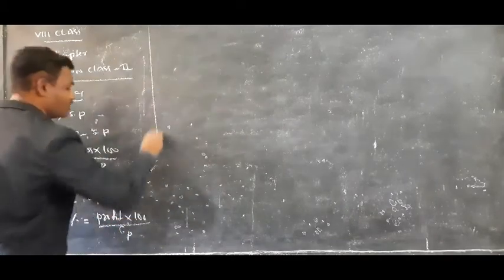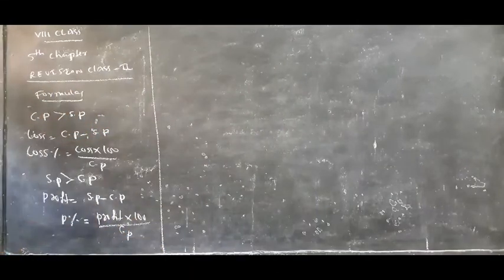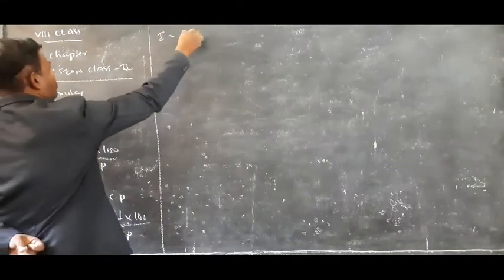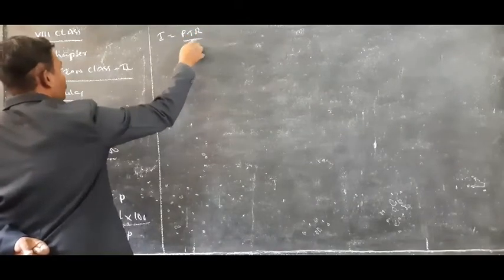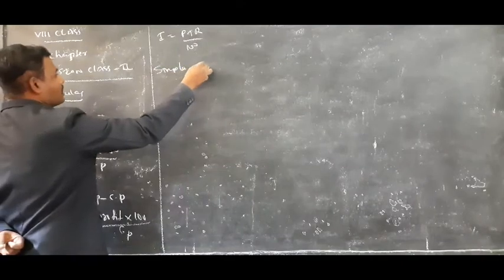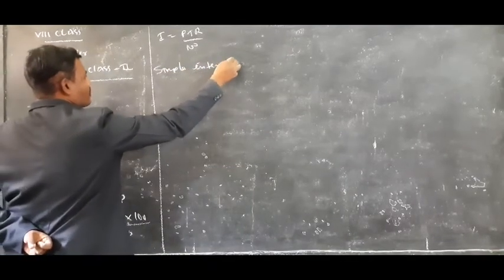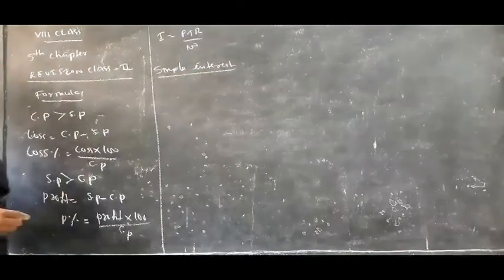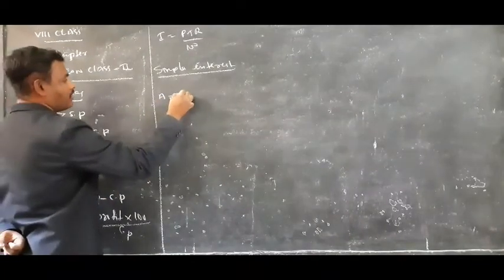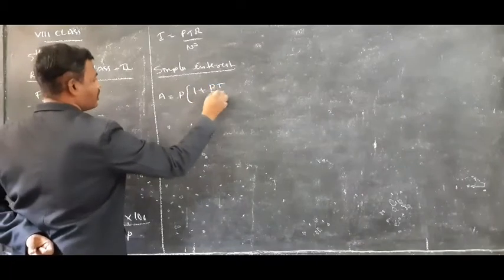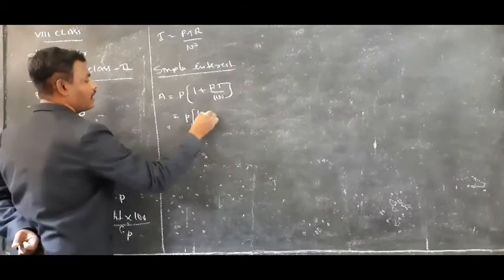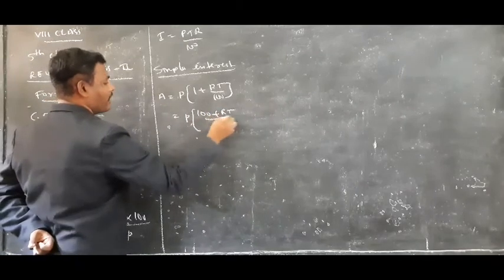Profit and loss are always calculated on cost price. Then, for interest, I is equal to PTR by 100. For the total amount in simple interest, A is equal to P bracket 100 plus RT by 100.